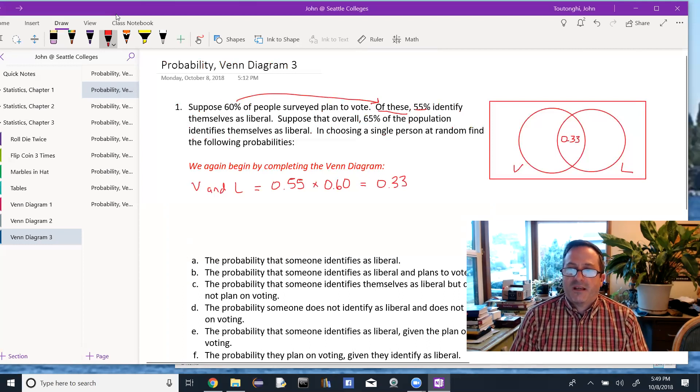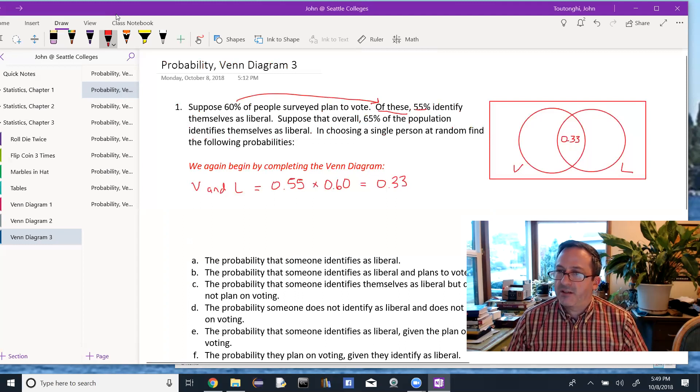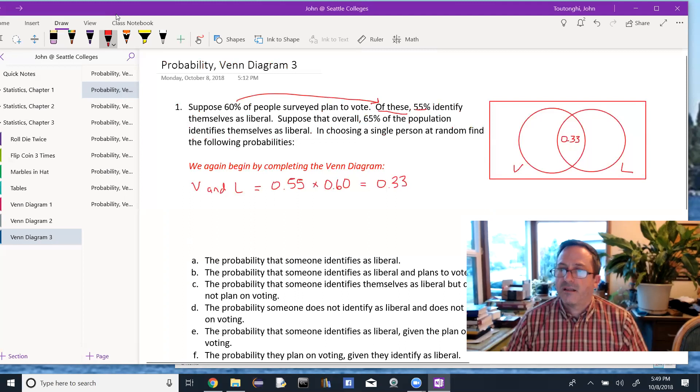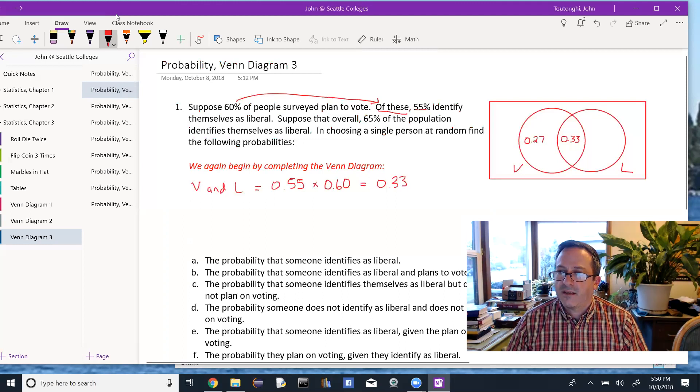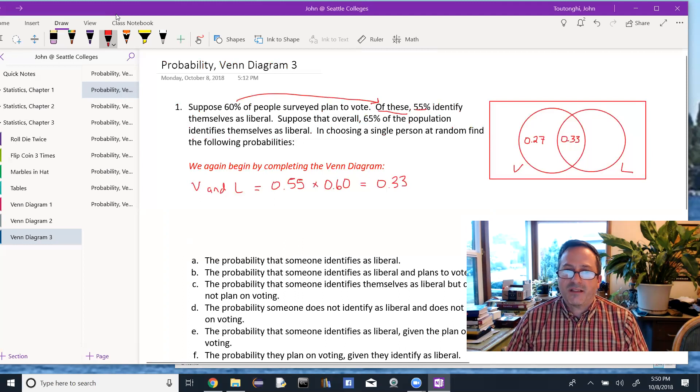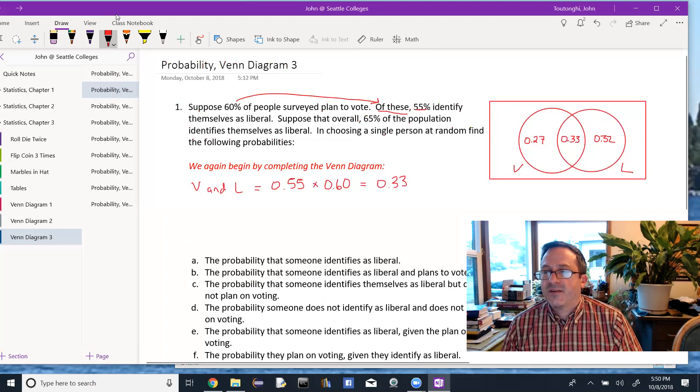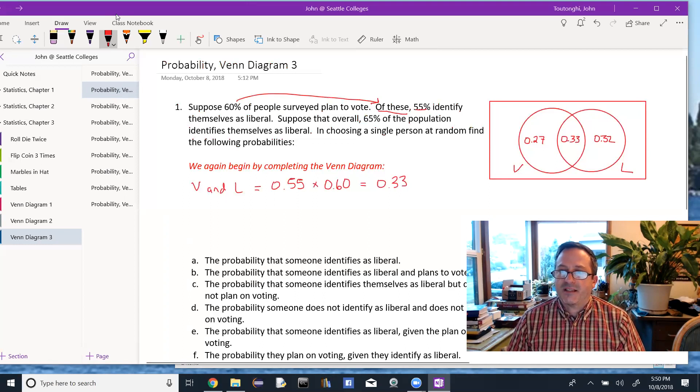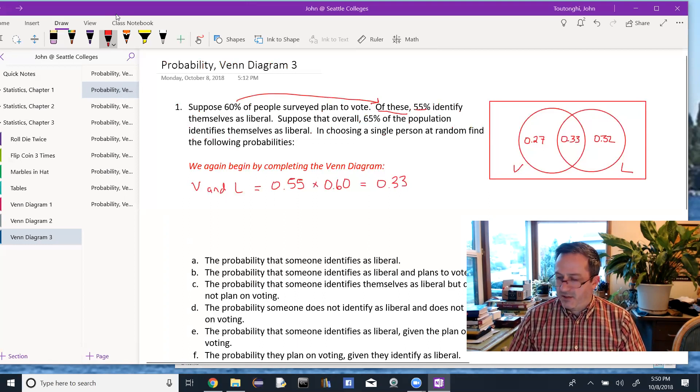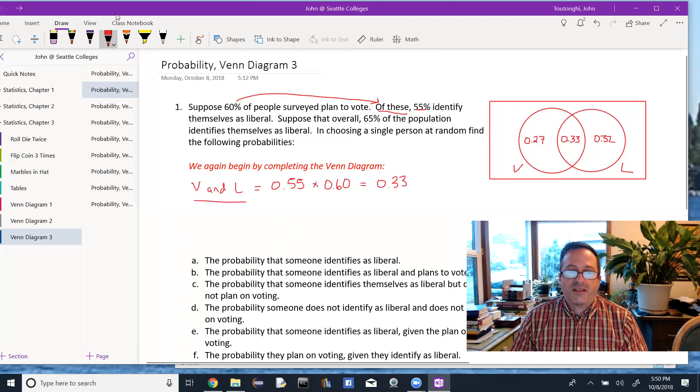That's the tricky part. Now the rest of the Venn diagram kind of draws itself because we know 60% plan to vote. So that leaves us with 27% in here. And again, in this example, we're given percentages, so I'll just convert them to decimal. And then we know that overall 65% of the population identifies themselves as liberal. So 32% and 33% is the 65% identifying themselves as liberal, 27% and the 33% is the 60% who say that they plan to vote.